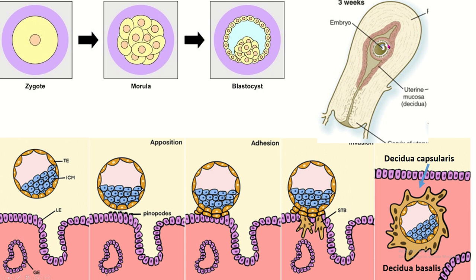The fetus with chorion is surrounded by decidua known as the decidua capsularis. This is the uterine cavity, and the decidua parietalis lines it. The decidua basalis is present in between the fetus and the myometrium. This portion is important because this part of the chorion and decidua forms the placenta.